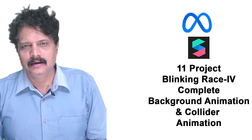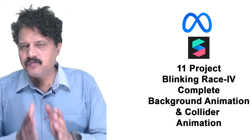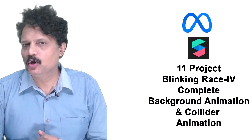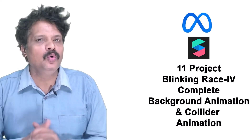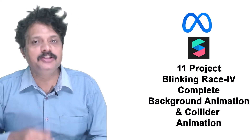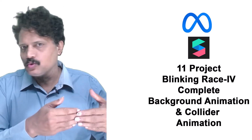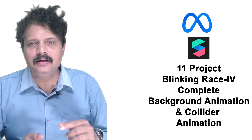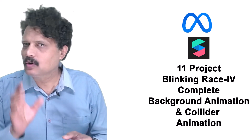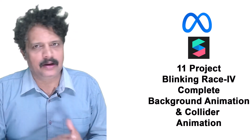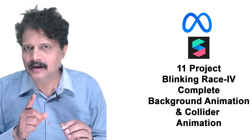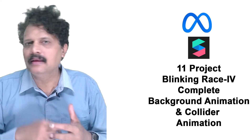Hello and welcome back. This is the fourth session on this Blinking Race project. In this session we are now going to create the second animation of BG2, so that both move together, and the next thing we are going to do is animate the collider. I want you to understand the logic as you build the game.